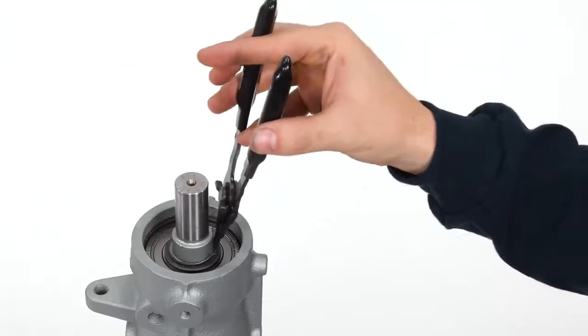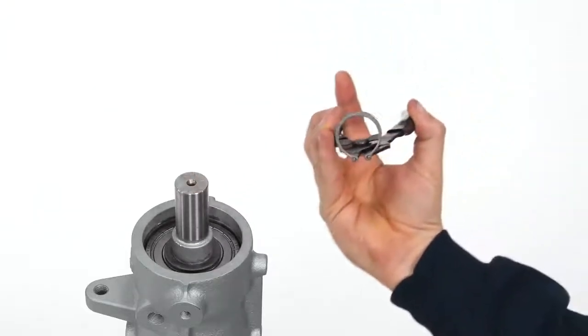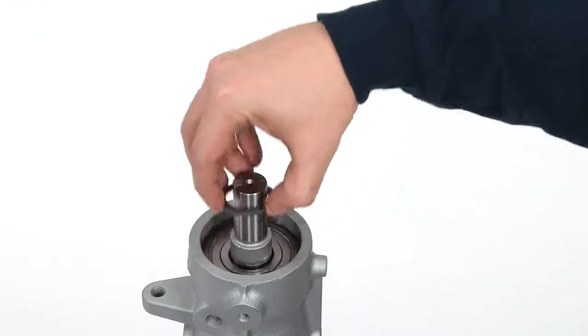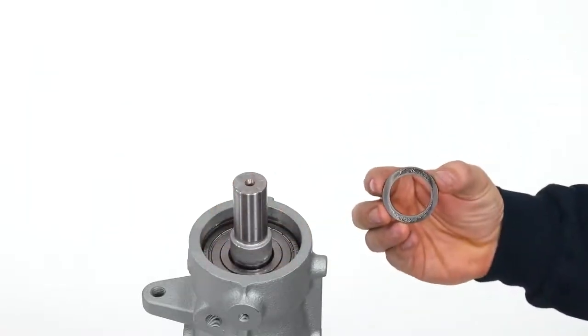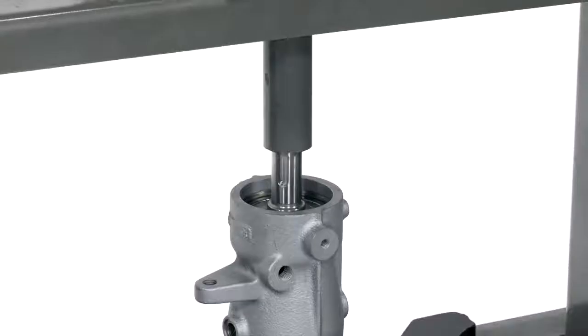Next, remove the inner snap ring, followed by the inner spacer. Using a hydraulic press, press the shaft out of the bearing frame towards the impeller end.